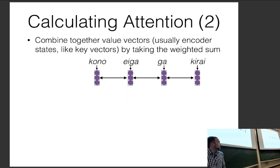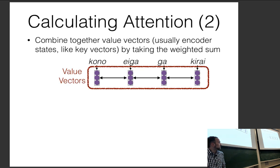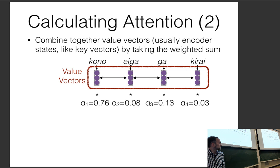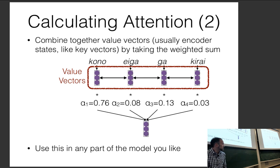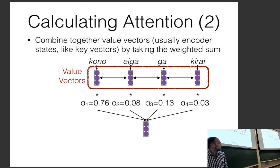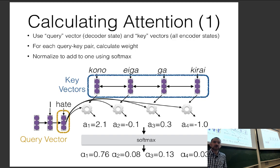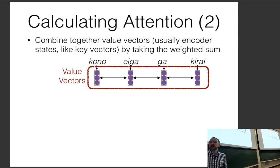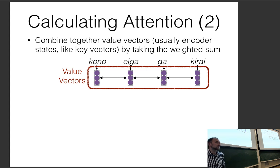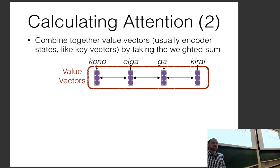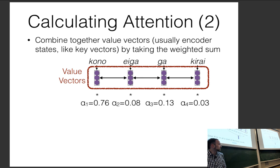We combine something called value vectors — usually encoder states — by taking a weighted sum based on attention weights, giving us the context vector, which we can use in any part of the model. The original attention paper doesn't make the query/key/value distinction, but it's useful. The key and value vectors can be the same encoder hidden states, or you can make them different: use key vectors to look up what to read, and value vectors to hold the actual content, giving more modeling flexibility.